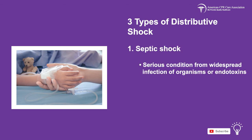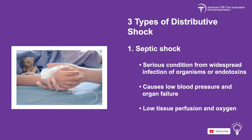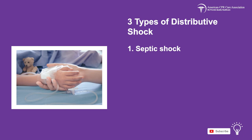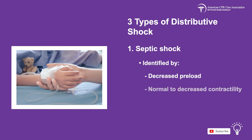Septic shock is a serious condition that happens after a widespread infection of certain organisms or endotoxins, causing dangerously low blood pressure and organ failure. With septic shock, there is low tissue perfusion and oxygen. Septic shock can be identified by decreased preload, normal to decreased contractility, and an afterload that is variable.